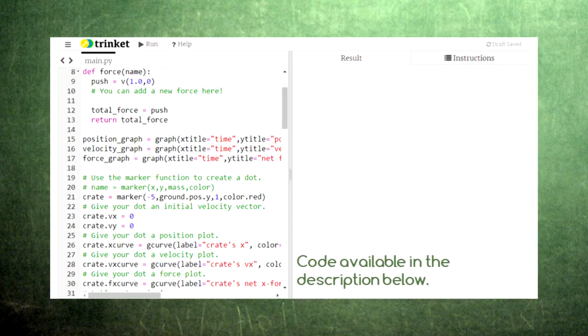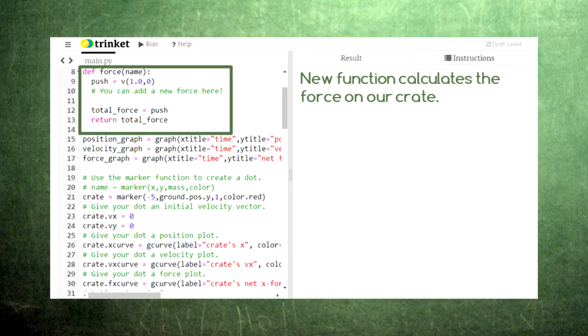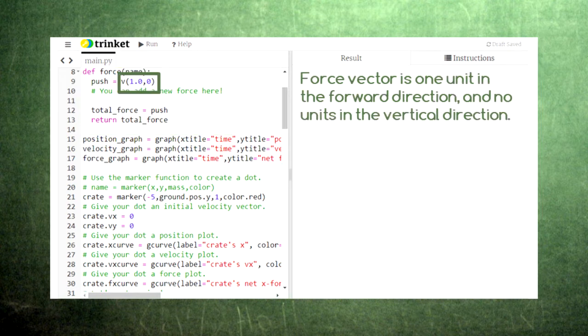Here's our animation code that we've worked with several times. We've now added a function at the beginning called force. This function takes the input of the name of the object we are pushing and produces the output of the total force pushing on that object. In this first case, we are pushing the crate forward with a total force of 1. The v here indicates a vector with an x component of 1 and a y component of 0.